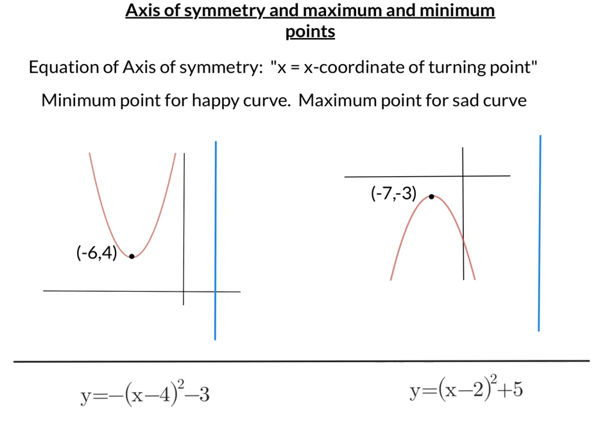In this video, we're going to look at the axis of symmetry and max and min points of a quadratic graph. The axis of symmetry is the line that goes vertically through the turning point that splits the quadratic graph exactly in two.